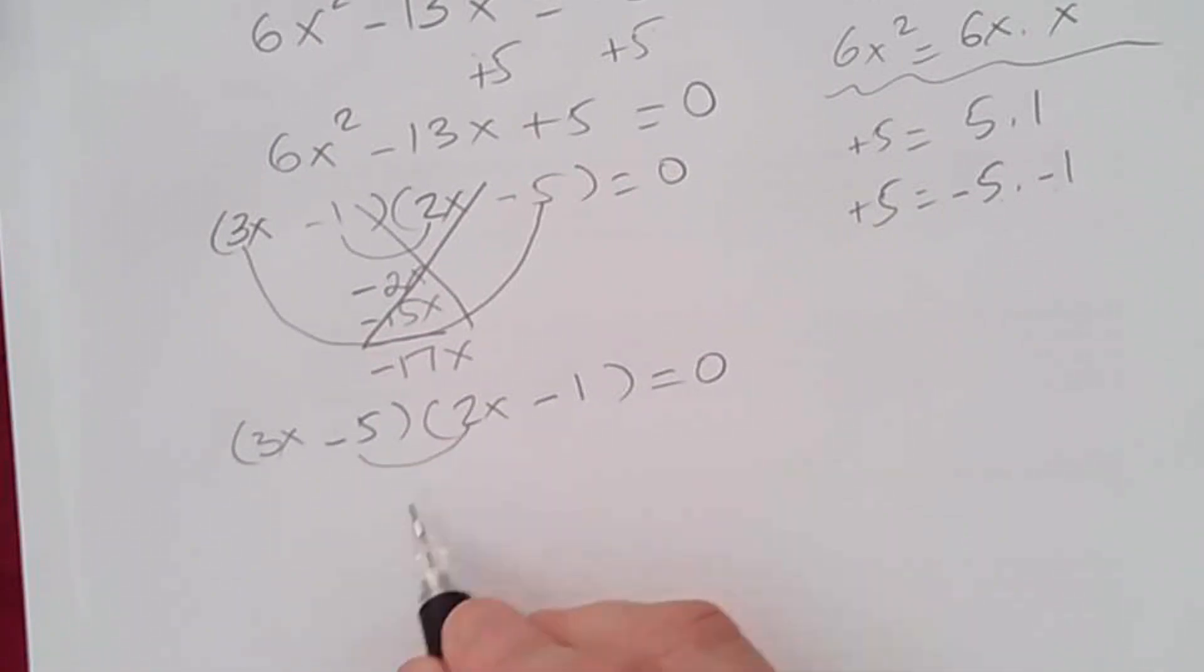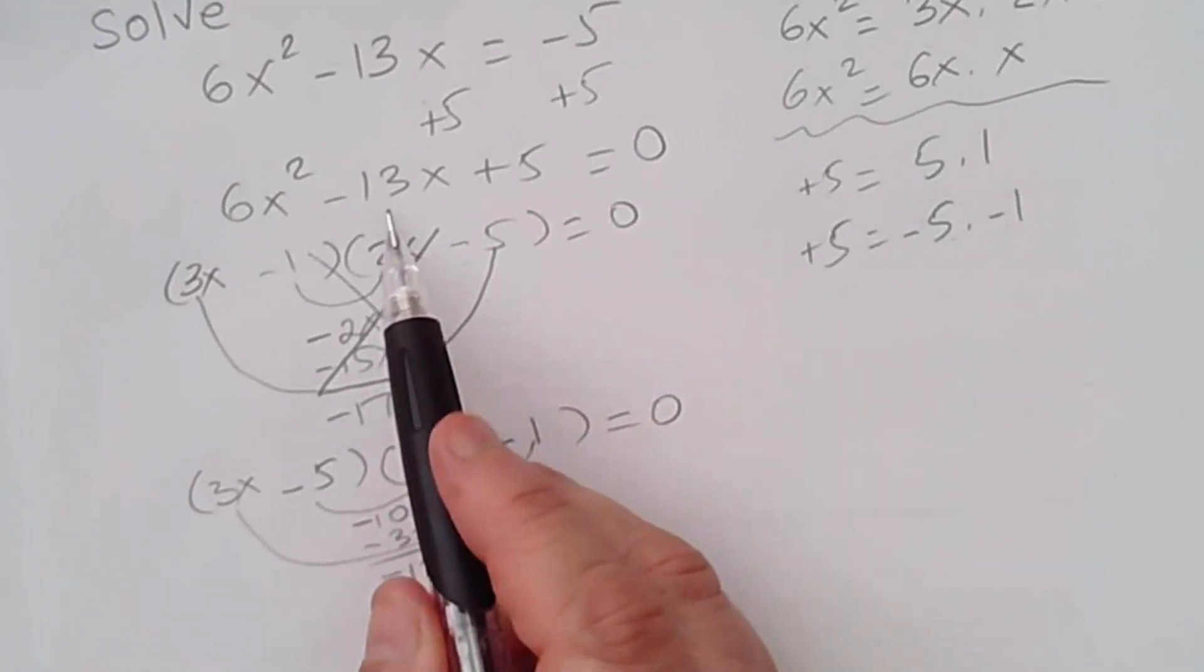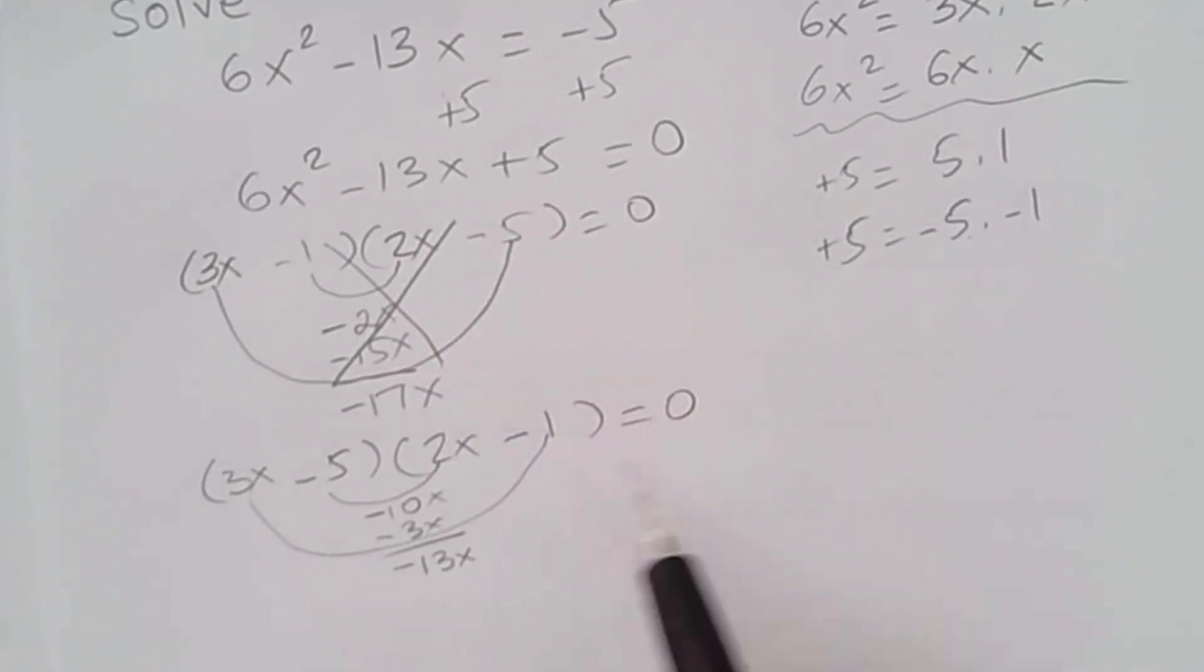Again, if we multiply these two, we're going to get negative 10x. And if you multiply these two, you're going to have 3x times negative 1, negative 3x. And if you add them up, you get negative 13x. And if you notice, this is what we have here in our example. So this is the correct factoring.